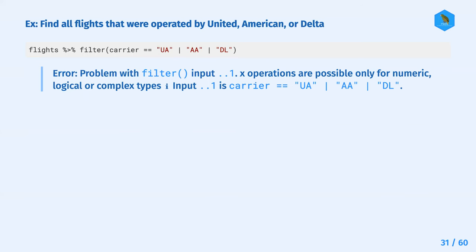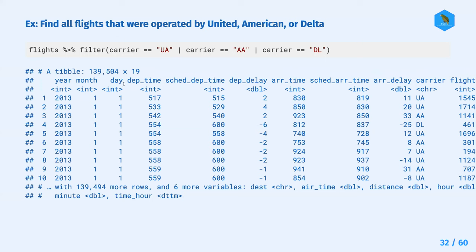Option three is different. Instead of having UA followed by the vertical pipe and immediately the other two carriers, this approach lists each argument separately and separates them with the OR operator - the vertical pipe. Option three did give us an output, and option four gave the same output.